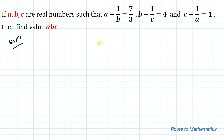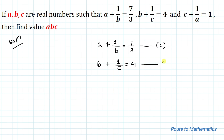Our first equation is a + 1/b = 7/3 (Equation 1). The second equation is b + 1/c = 4 (Equation 2). And the third equation is c + 1/a = 1 (Equation 3).